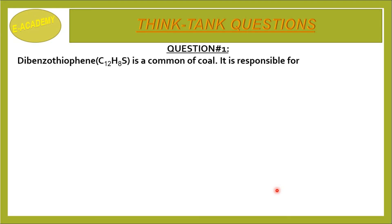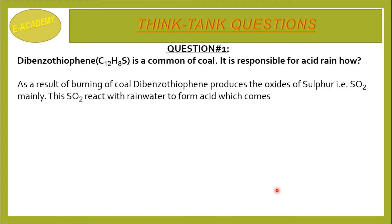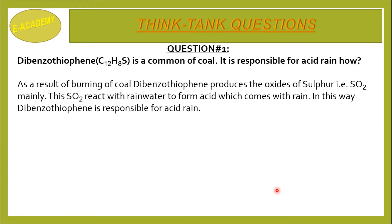Question No. 1: Di-Benzothiophen (C12H8S) is a common product of coal. It is responsible for acid rain. How? Di-Benzothiophen is a product of coal. As a result of burning of coal, Di-Benzothiophen produces oxides of sulfur — SO2 mainly. This SO2 reacts with rain water to form acid, which comes down with rain. In this way, Di-Benzothiophen is responsible for acid rain.